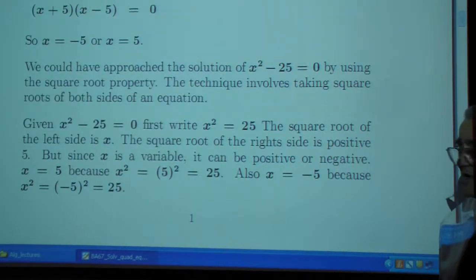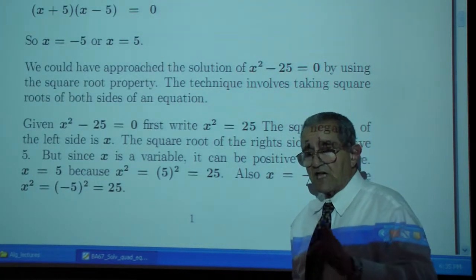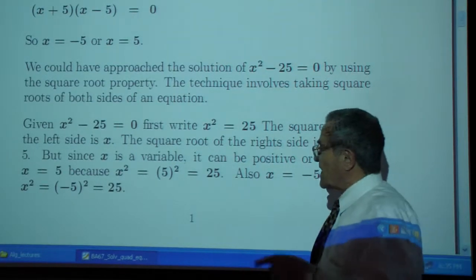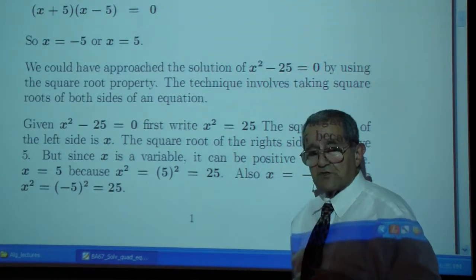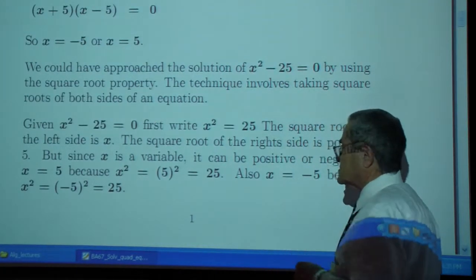Since x is a variable, x can be positive 5 or negative 5. I'm not saying the square root of 25 is negative 5, but I'm saying x can be the opposite of the square root of 25. So x can be plus or minus 5.